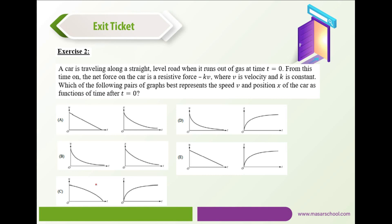Exercise 2 — exit ticket: A car is traveling along a straight level road when it runs out of gas at T equals 0. From this point on, the net force is a resistive force minus KV. Which pair of graphs best represents the speed V and position x as functions of time? The speed decreases exponentially, so we eliminate choices A, C, and E. Between B and D, the correct answer is D: although the car's velocity is decreasing, it still covers distance so position increases, and when the car reaches its stopping point, position remains constant. Therefore D is correct and B is wrong.